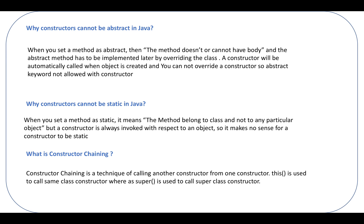Why can constructors not be static in Java? When you set a method as static, it means the method belongs to the class, not to a particular object. Static means there is only one copy of reference in memory — this is a property of the class. But a constructor is always invoked with respect to an object, so it makes no sense for a constructor to be static.